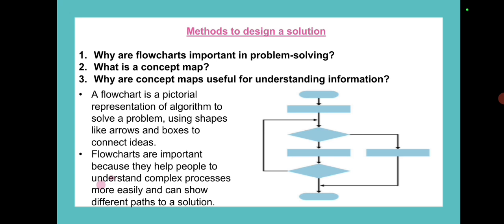Next topic is Methods to Design a Solution. Why are flowcharts important in problem-solving? What is a concept map? Why are concept maps useful for understanding information? Basically, a flowchart is a pictorial representation of an algorithm to solve a problem using different shapes and arrows. A flowchart always flows downwards. This means start with the oval, which is used for start/end, parallelogram for input and output, rectangle for processing, diamond symbol for decisions, and connectors using flow lines to connect.